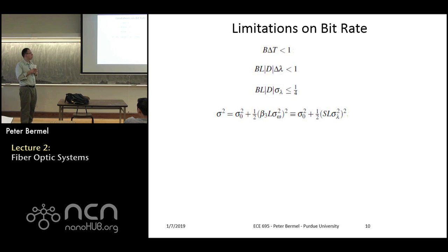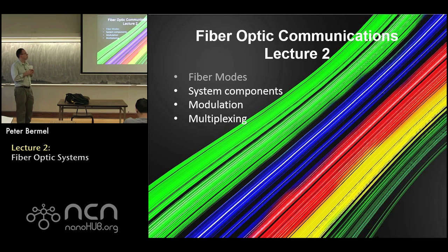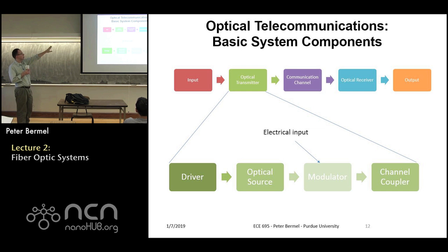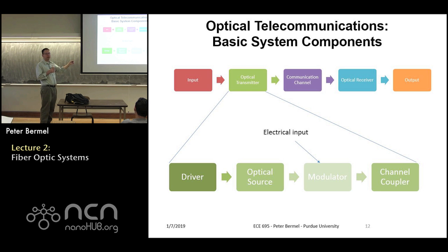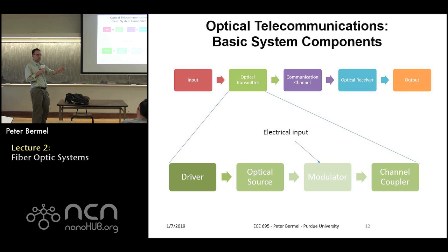Now for system design: we want to take some input and send it somewhere as output. The system consists of an optical transmitter, a channel, and a receiver. Within the transmitter there is a driver for the optical source, a modulator driven by an electrical input signal, and a channel coupler. On the receiver side, you couple out of the channel, pass through a photo detector, and then demodulate the signal to recover the original data.